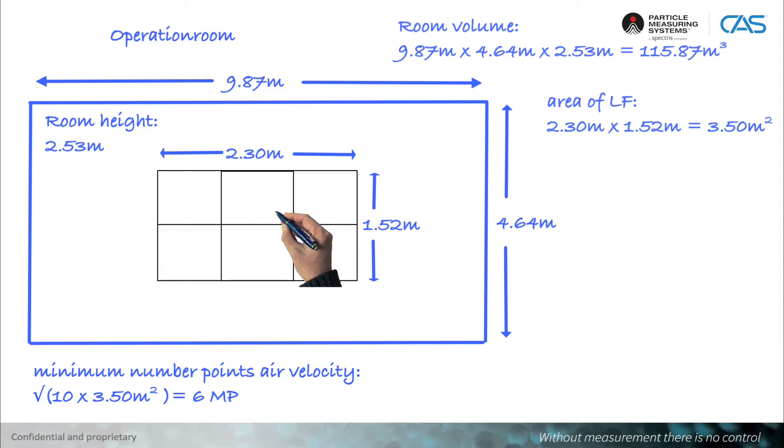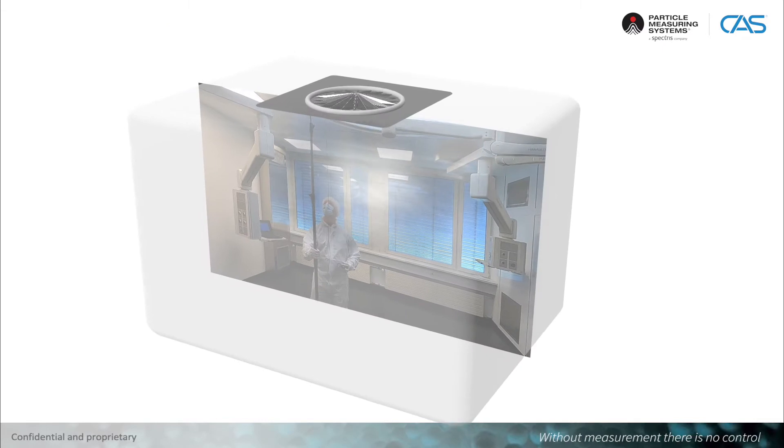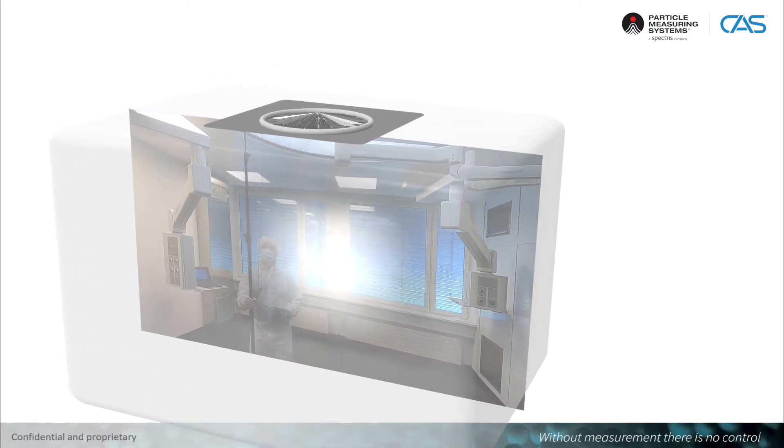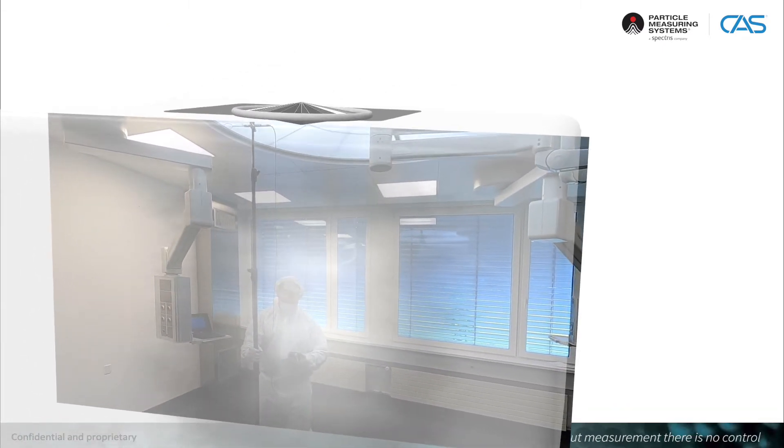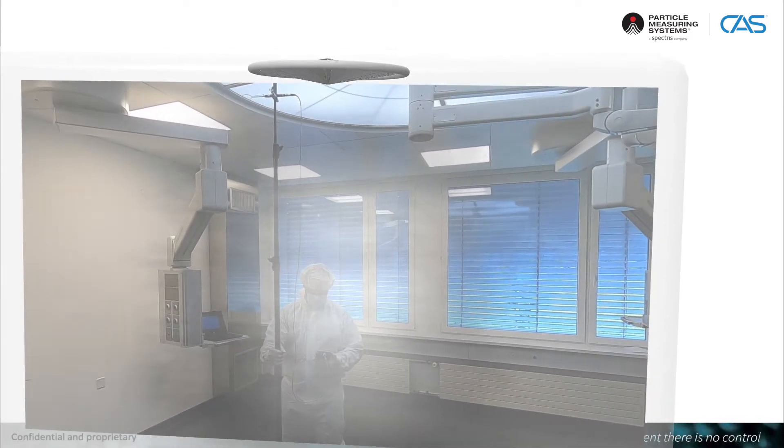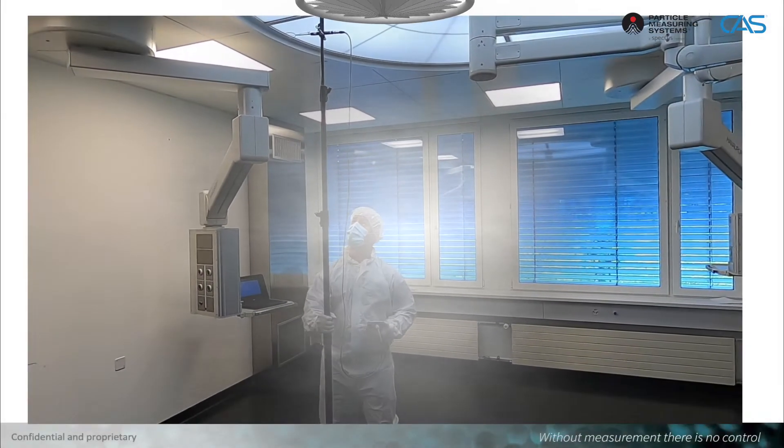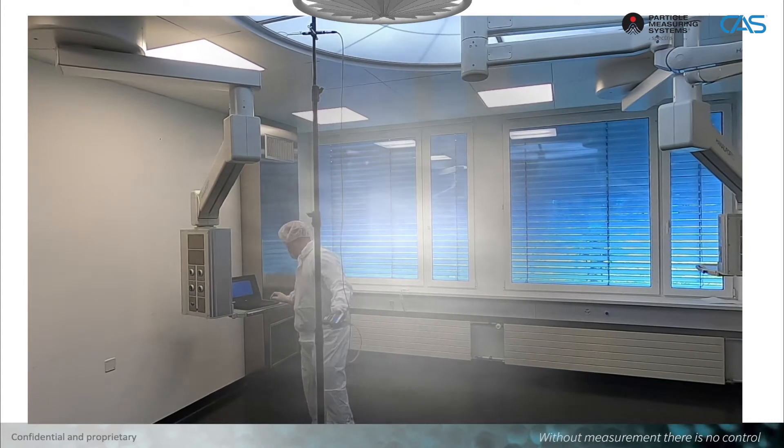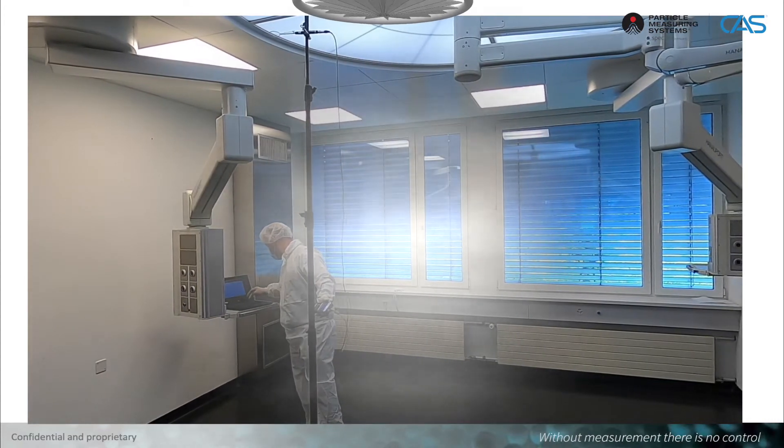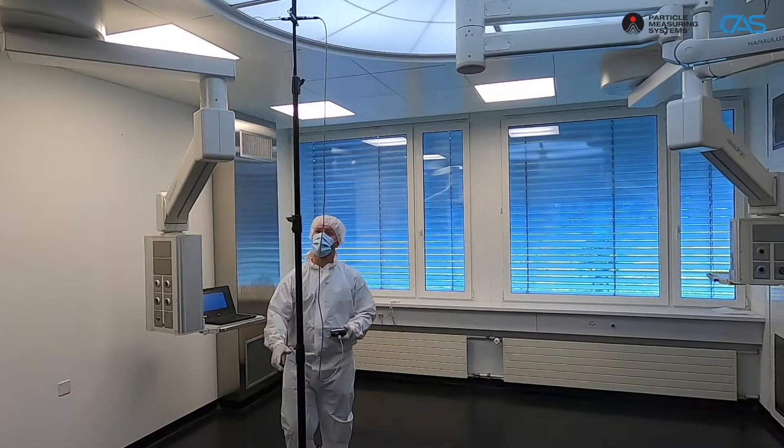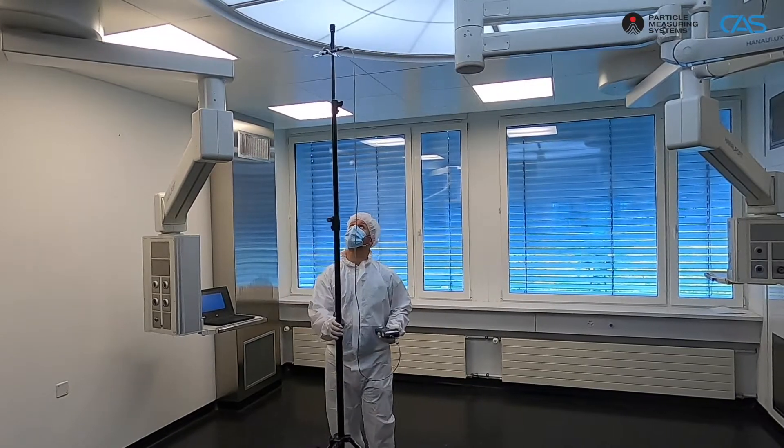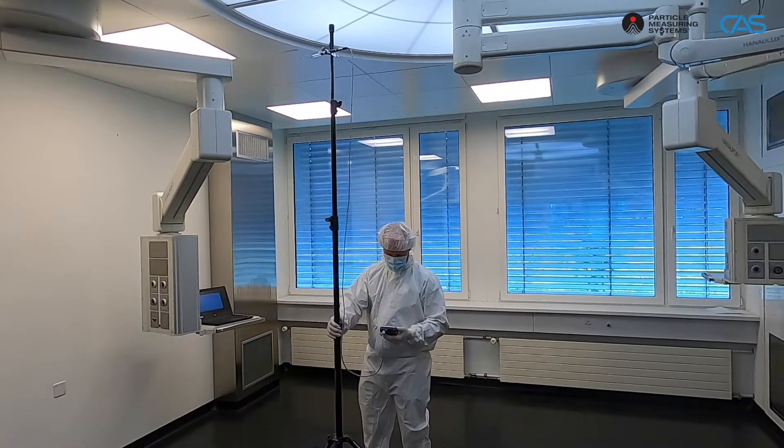The number of measuring points and their position must also be documented accordingly. Ideally, they should be evenly distributed over the air outlet element. As mentioned earlier, the air outlet element here is a laminar flow, or LF for short. This ensures that the air is guided downward evenly, i.e., laminarly.